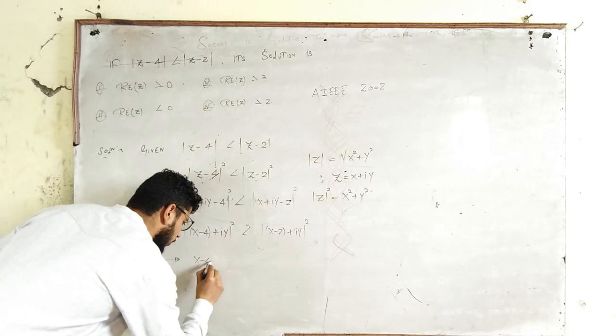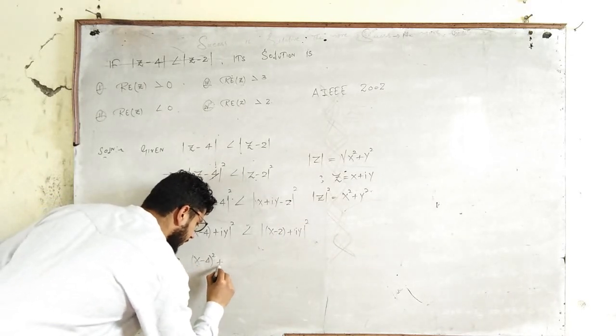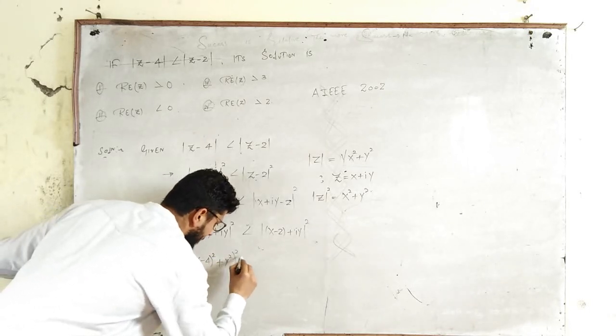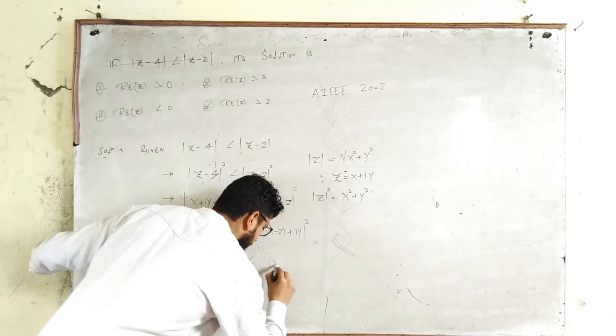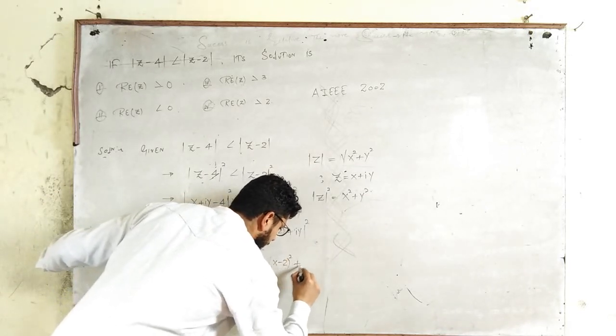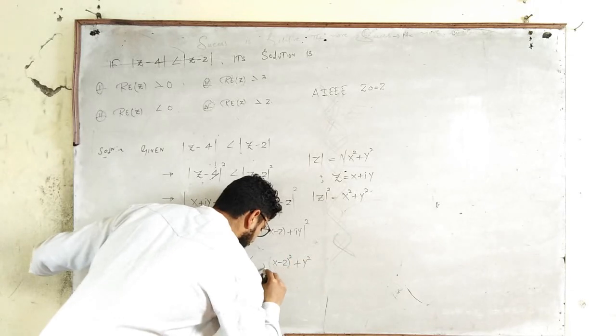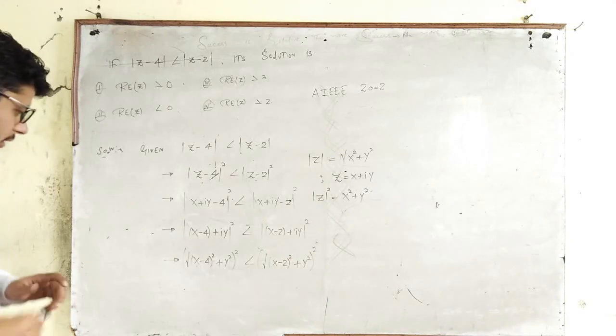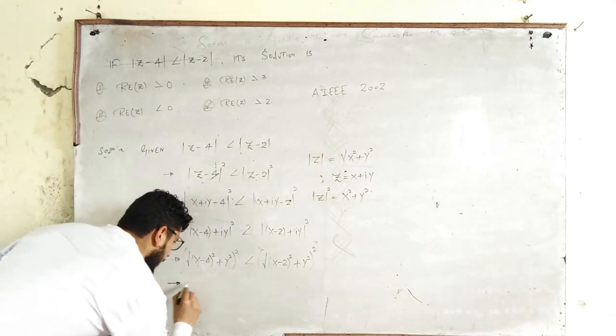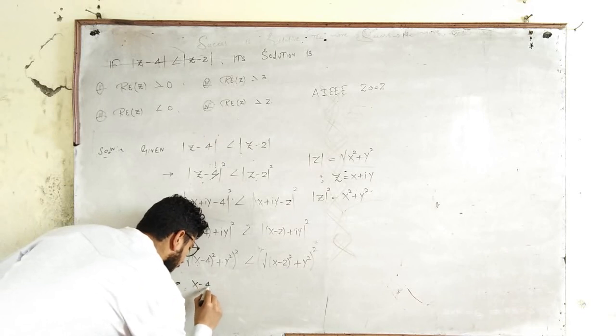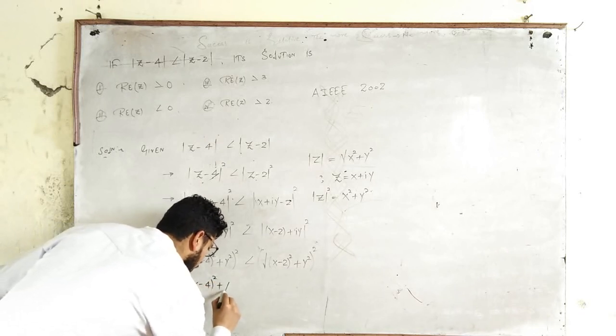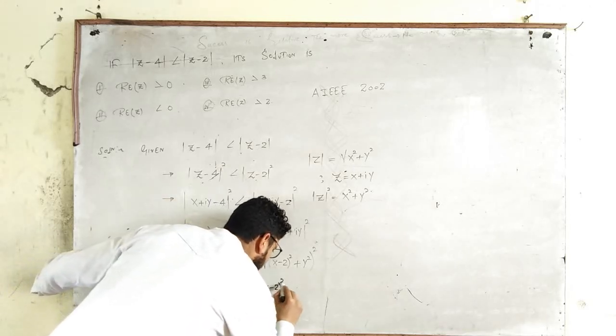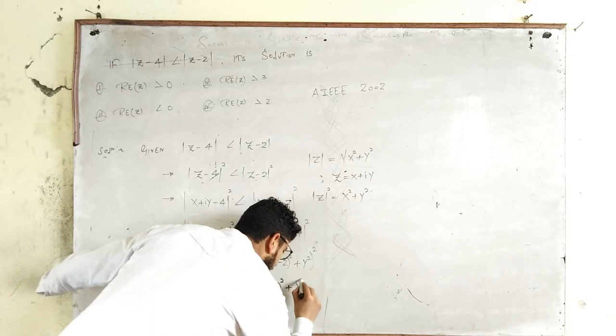You will get (x - 4)² + y² under the square root, squared. And here you will get (x - 2)² + y² under the square root, squared. Now the root and square will cancel, so you are left with (x - 4)² + y² less than (x - 2)² + y².